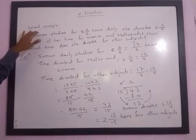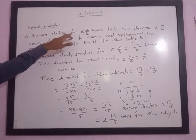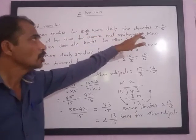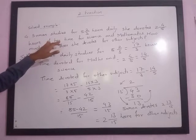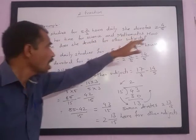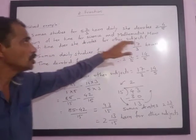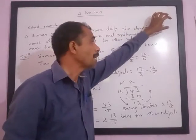7th standard, in the fraction chapter, we are solving the solved examples. In this fourth example: Suman studies for 5 2/3 hours daily. She devotes 2 4/5 hours of her time for science and mathematics. How much time does she devote for other subjects? Please note, this is the total time she studies, and this is the time given for math and science.